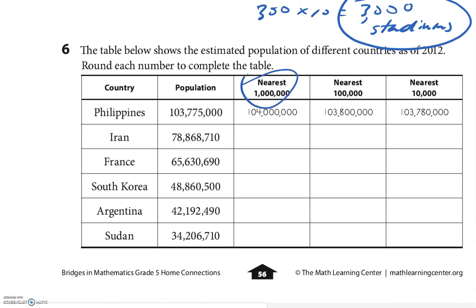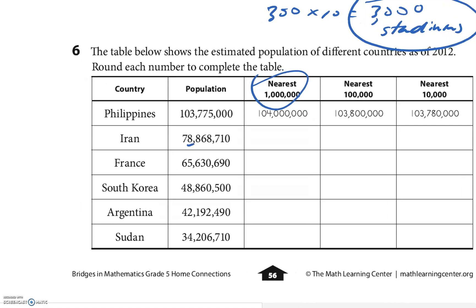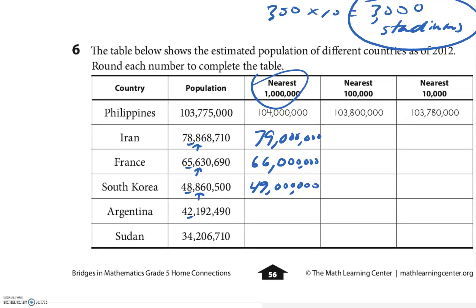Now rounding to the nearest million — these are tough. For the first number: am I at 78 million or 79 million? I look and there's an 8, so it's 79 million. Next, there's a 6 with another 6 next to it — rounds up to 66 million. Then there's an 8 with another 8 — rounds up to 49 million. Argentina: there's a 2 with a 1 next to it — stays at 42 million. Sudan has a 4 but the digit is 2 — stays at 34 million.